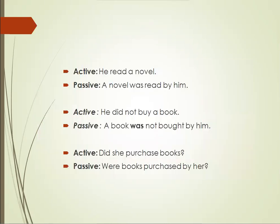Let's see the examples. First: 'He read a novel.' Don't be confused — 'read' is the second form of the verb here in simple past tense. If it were present tense, it would be 'reads.' Here, 'he' is the subject, 'read' is V2, and 'a novel' is the object. According to the structure, we put the object first: 'A novel was read by him.'